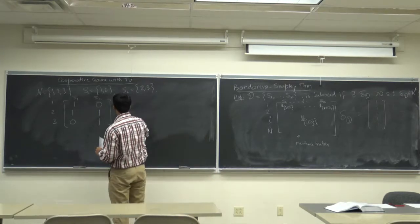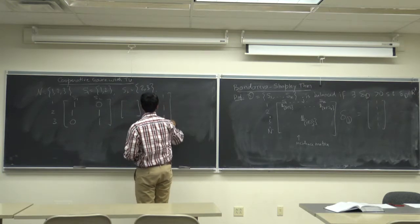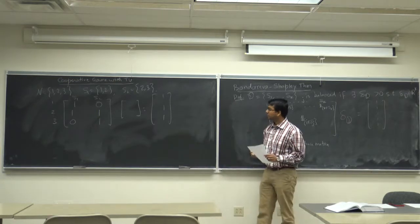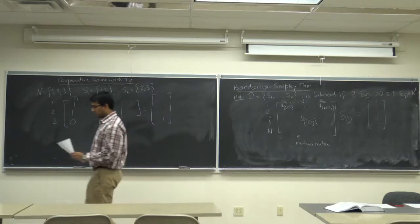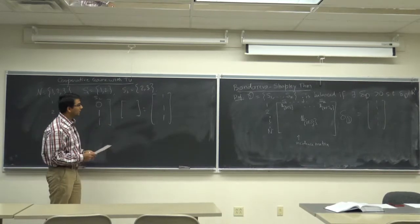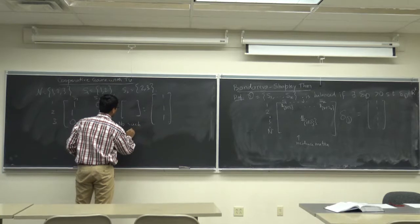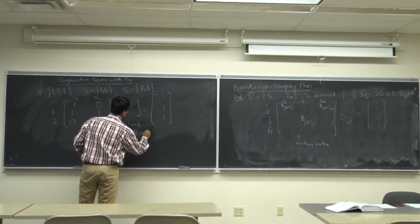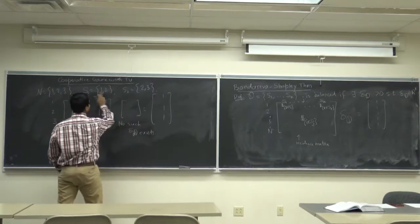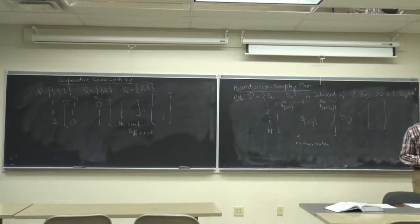We need delta in R^2 such that the resulting matrix multiplication gives a vector of all ones. Staring at this equation, you realize there is no such delta(D) — no such delta exists that can make all terms equal to 1. So this D consisting of S1 and S2 is not a balanced coalition.